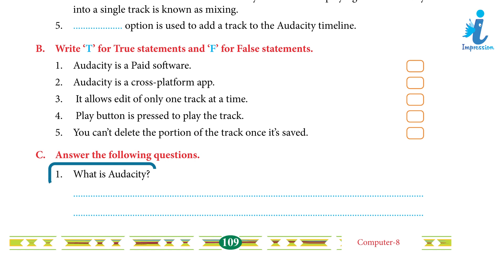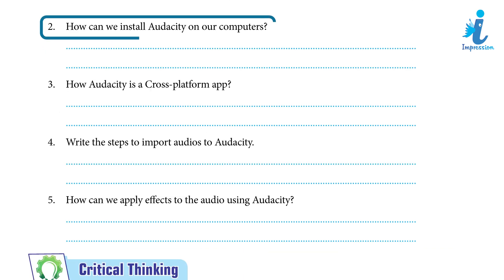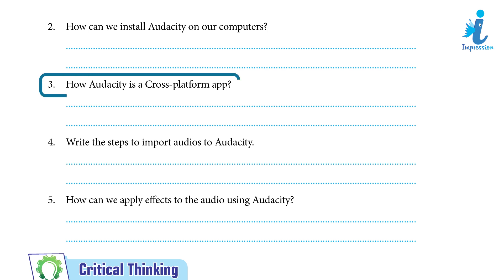C. Answer the following questions: 1. What is Audacity? Answer: Audacity is a free open source program that enables you to edit and record audio. It was released on May 28, 2000. 2. How can we install Audacity on our computers? Answer: Audacity is a free open source program. Open the browser, type www.audacityteam.org in the address field, and download it. 3. How is Audacity a cross-platform app? Answer: Audacity allows you to install it on devices running Windows, Linux, or Mac OS.